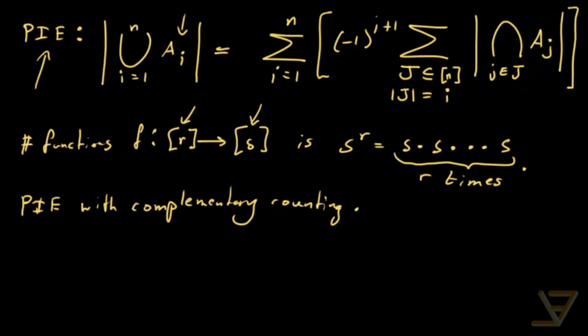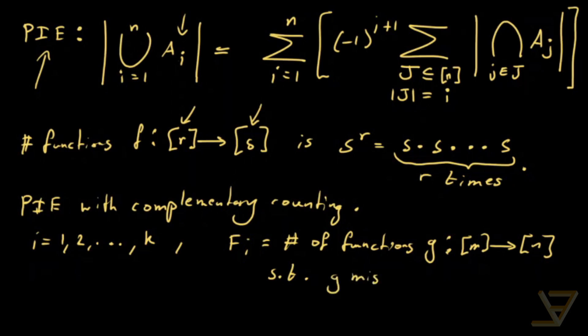Well, what we're going to do is say for i equals to 1, 2 through to k, we're going to say that Fi is equal to number of functions g from m to n such that g misses i.